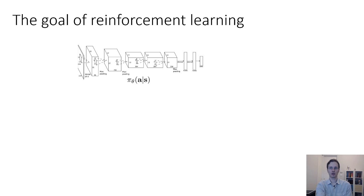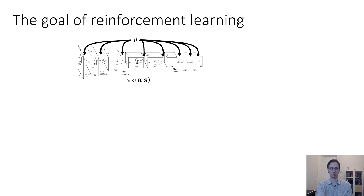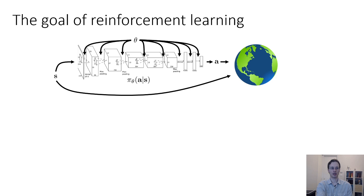Now that we've defined the Markov chain, the MDP, and the POMDP, let's define an objective for reinforcement learning. In RL, we're going to be learning some object that defines a policy. For now, let's assume that we learn the policy directly as pi_theta(a | s), where theta corresponds to the parameters of the policy. If the policy is a deep neural net, then theta denotes the parameters of that network. The state goes into the policy, the action comes out, and then the state and action go into the transition probability, which produces the next state.